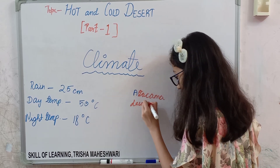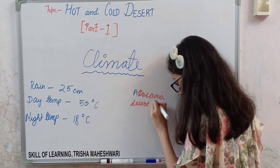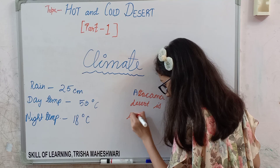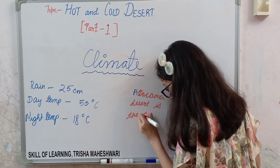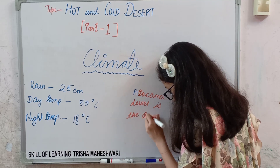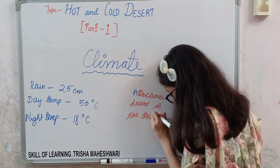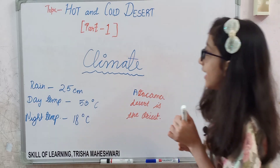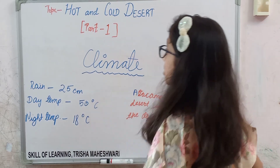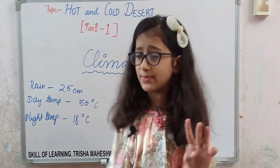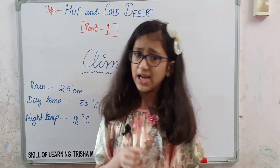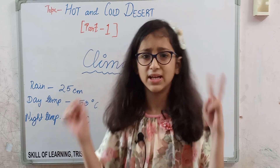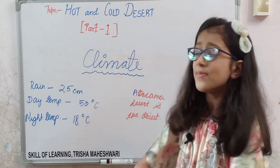The Atacama Desert is the driest desert in the world. That is it for today. The three remaining topics are wildlife, vegetation, and human occupation, which we will cover in part two.